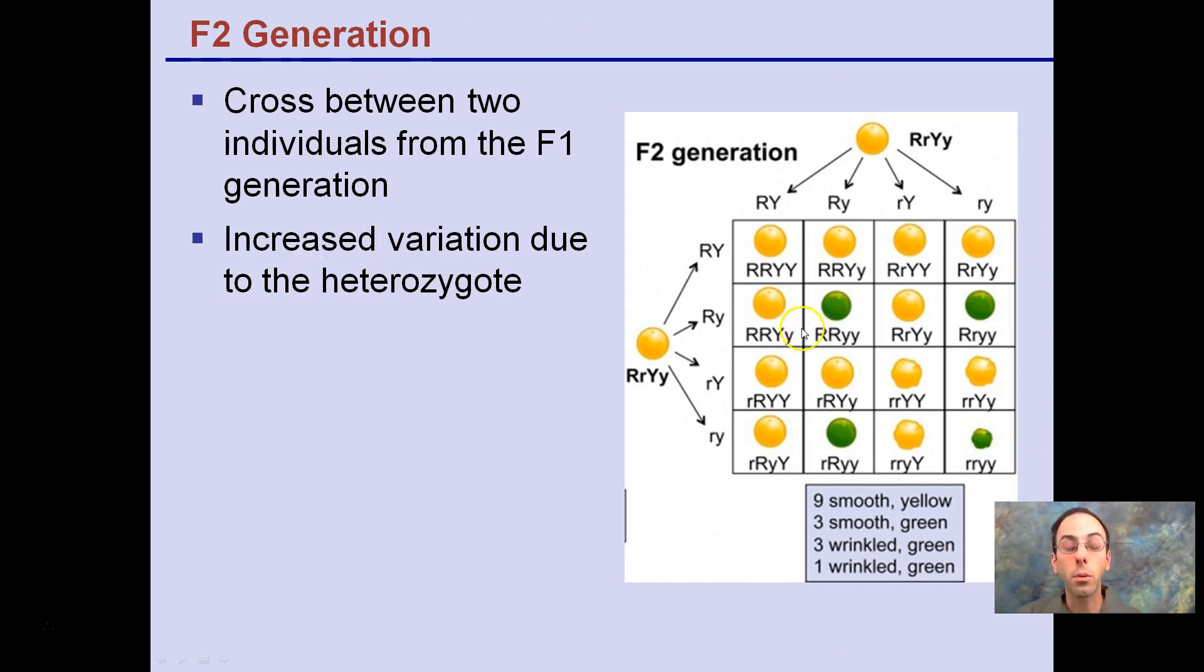The cross between two individuals from the F1 generation increases variation due to the heterozygote. We can notice here it basically forms a 9 to 3 to 3 to 1 ratio, and we see that represented right here.